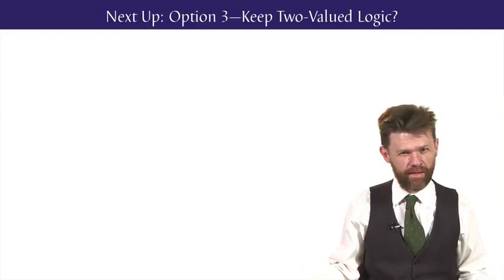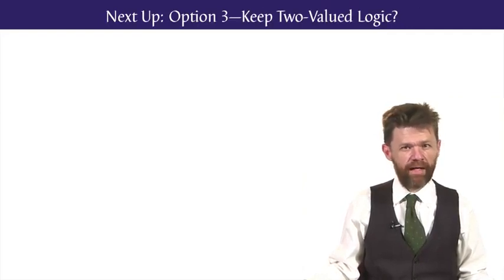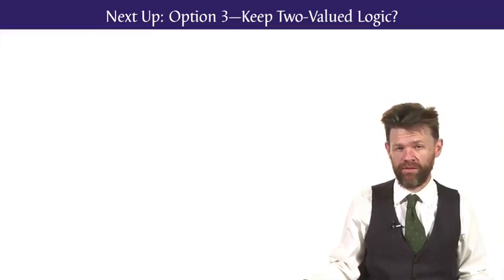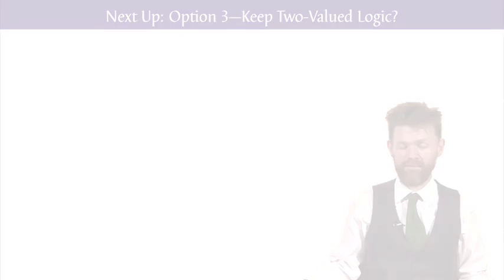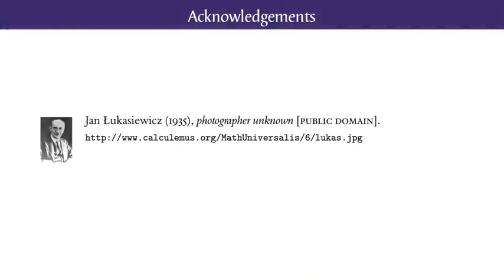I'm going to leave our exploration of fuzzy logic there. In our last lesson for this section, I'll take the other approach to our three options and see if there's some way that we can retain two-valued logic in the face of vagueness. Thank you.